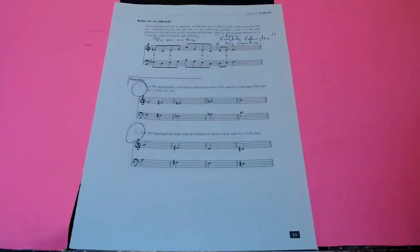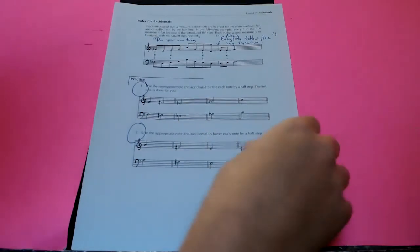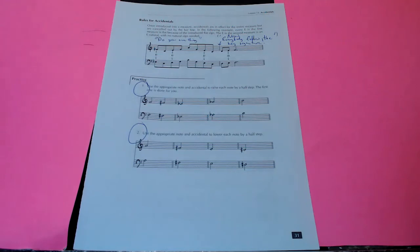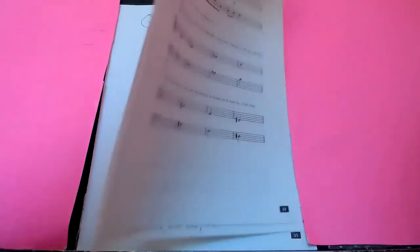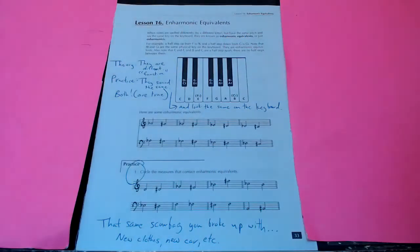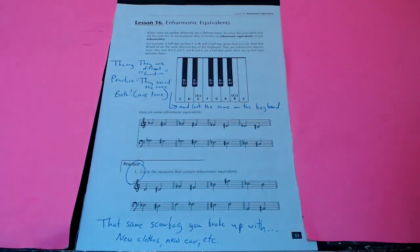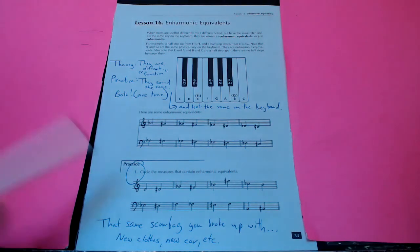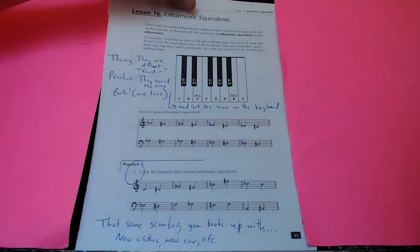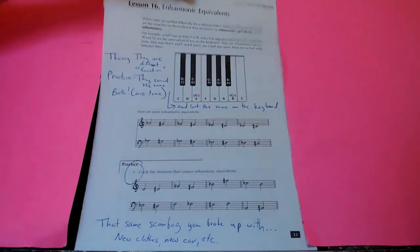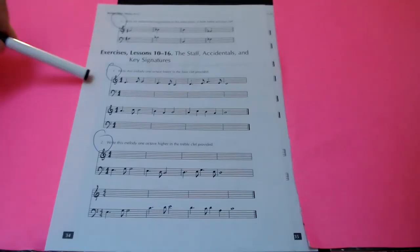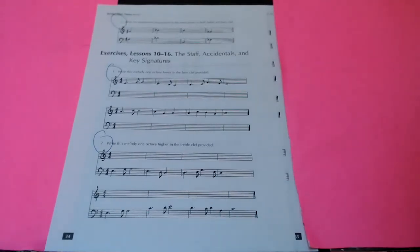Then, you're going to do page 31, you're going to do one and two. And then 32, you're going to do one and two. So, that's four exercises so far. 33 is right here. You're going to do number one on page 33. Circle the measures that contain enharmonic equivalence. Fun. Then 34, you're going to do one and two. So, there's three exercises on that page.